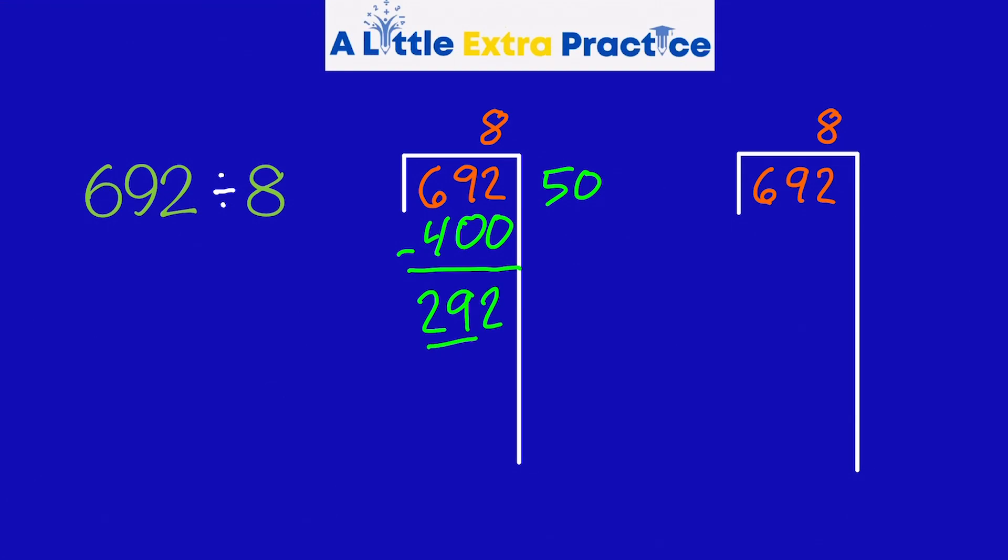Subtract. Now, what times 8 is almost 29? 8 times 3 is 24. So, 8 times 30 would be 240. Now, I brought that all the way down to 52. 8 times what is 52? 8 times 6 is 48. Subtract. And I have 4, remainder 4. Add these up. That is 86, remainder 4.